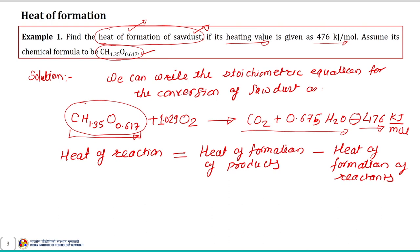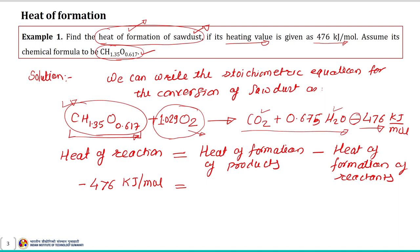Once you know the heat of formation of the products — which here are CO₂ and water — and the heat of formation of the reactants — which are the given fuel and the oxidant — you can estimate the heat of formation of the sawdust. Sometimes we use air, sometimes we use pure oxygen; in general we term it as the oxidant. The difference between the heat of formation of products and reactants will give us our answer.